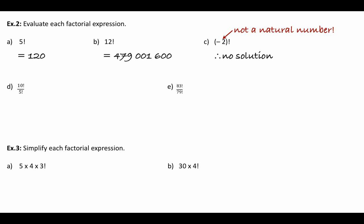If you attempt to do negative 2 factorial, you get a calculator error, because negative 2 is not a natural number. Watch out: if you type negative then 2 factorial, your calculator will give you an answer, because it interprets that as taking 2 factorial and making it negative. But if you put bracket, negative 2, bracket, factorial, you'll get a calculator error. You can't multiply negative 2 by consecutive decreasing numbers down to 1 — it's impossible.